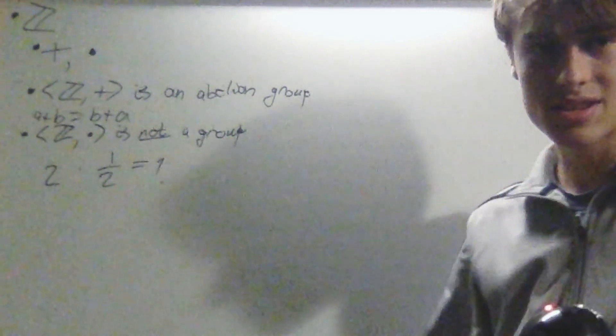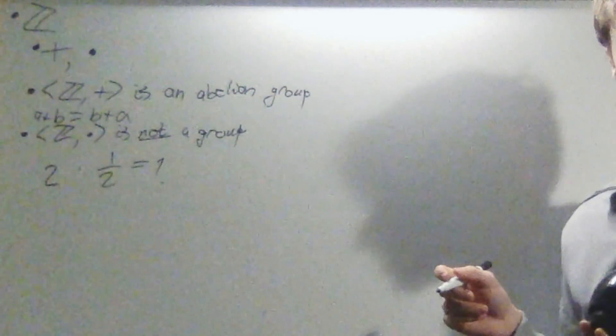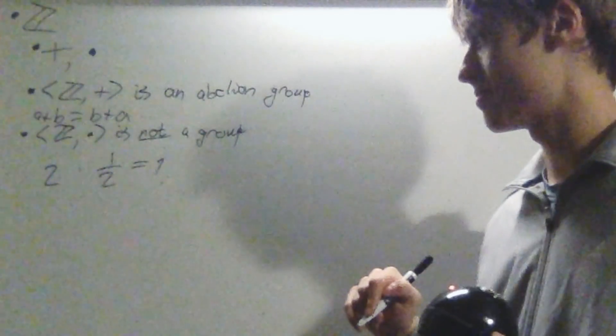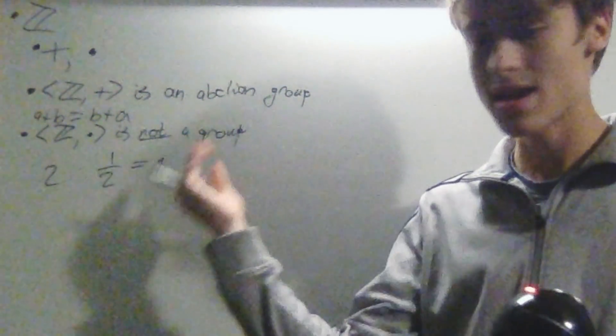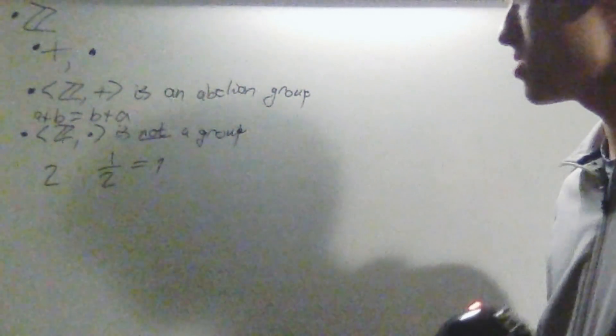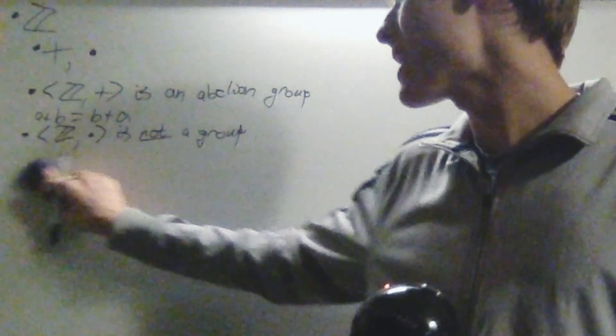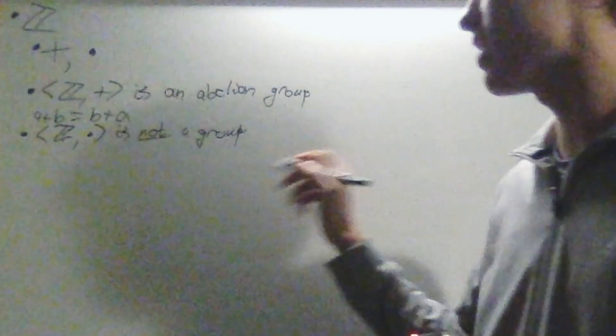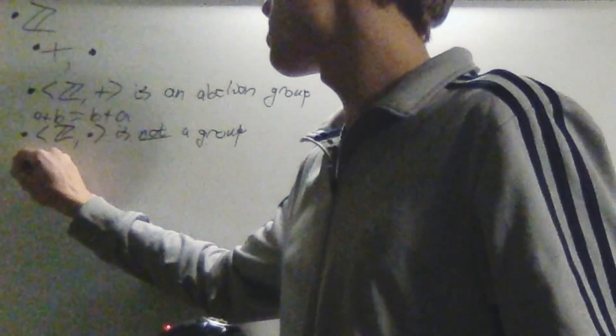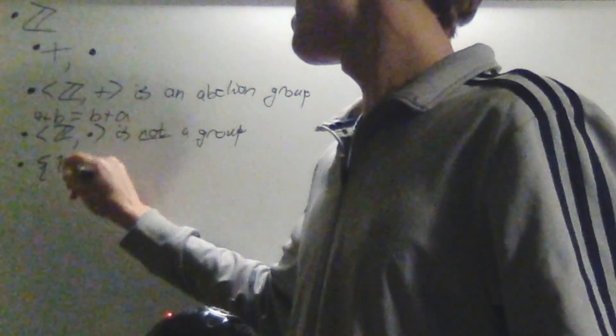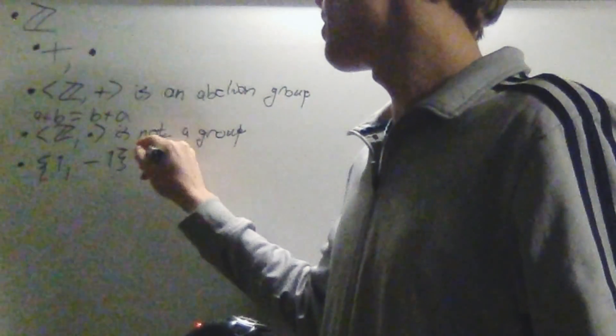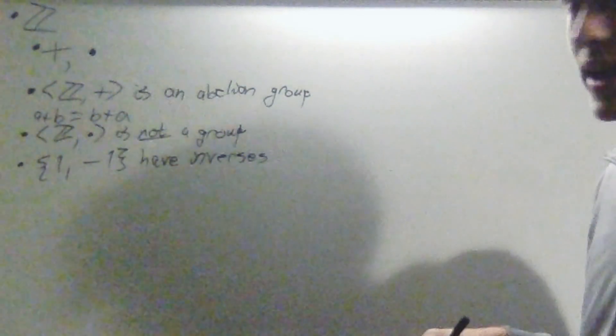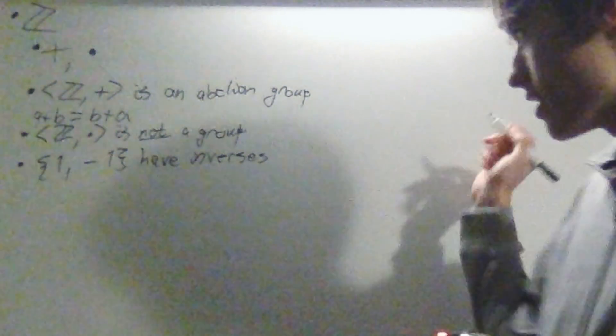However, one half is not an integer, and so this is an example of a value that has no inverse, and there's many, many examples in the integers. There's actually only two values that have inverses. It's one and negative one. This concept of having inverses within the integers will actually be important later.